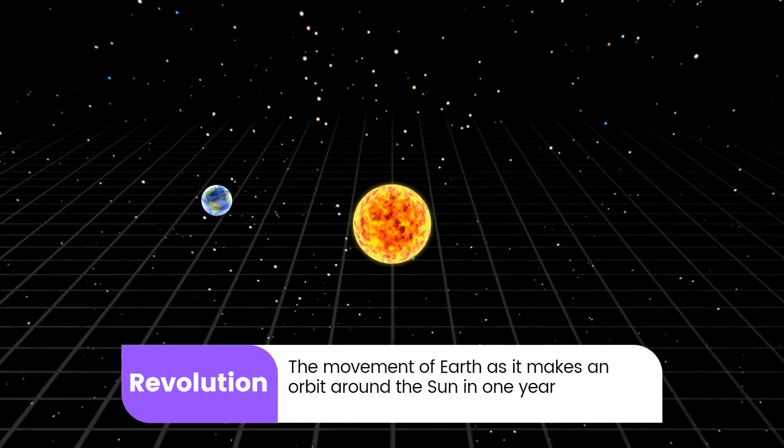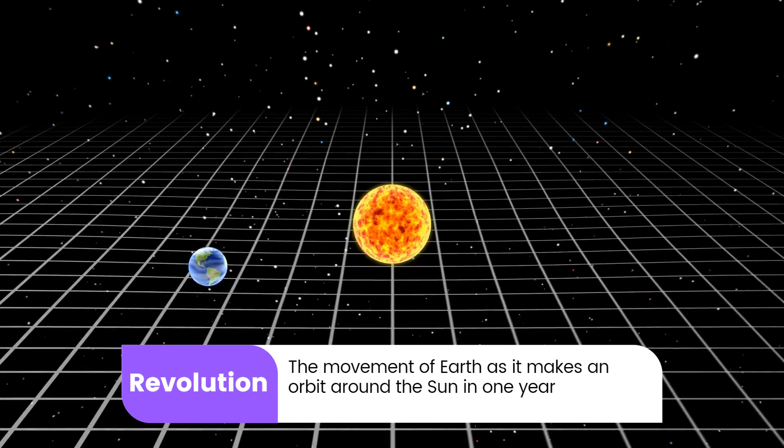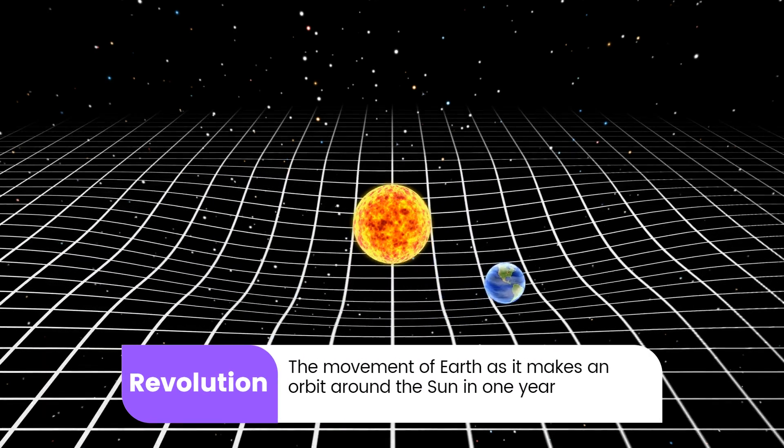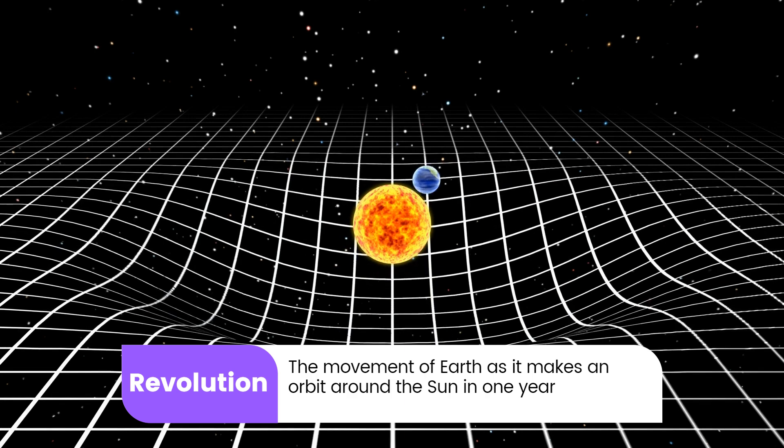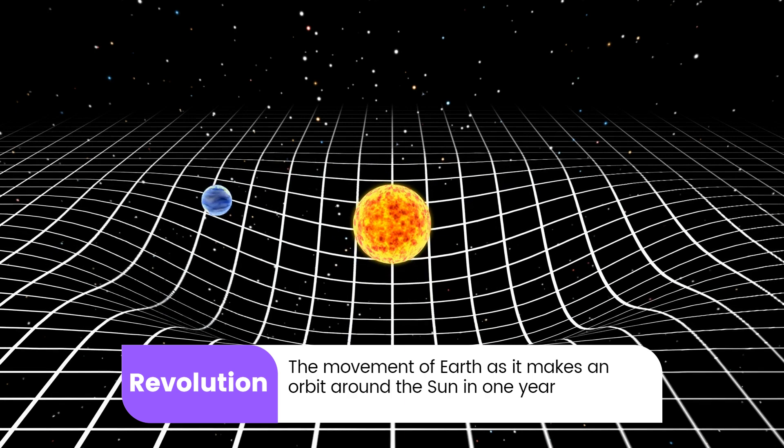21. Revolution: The movement of Earth as it makes an orbit around the Sun in one year.